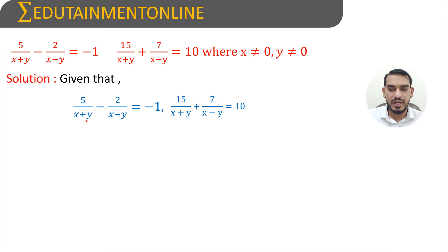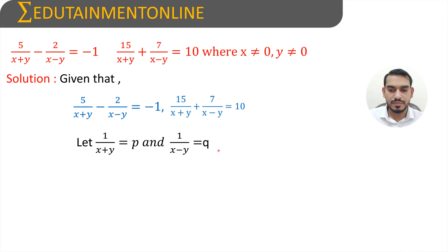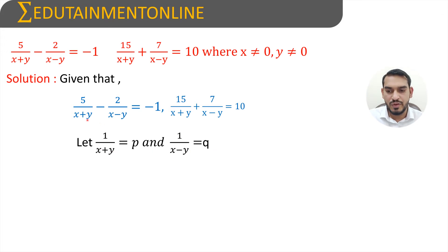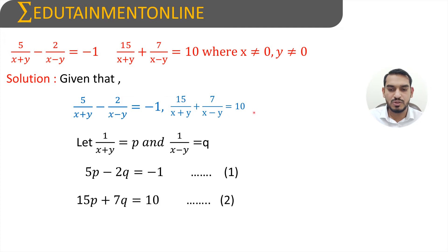Here we have (x+y) and (x−y) in the denominators. So we can consider 1 by (x+y) as p and 1 by (x−y) as q. Substituting these values, we get 5p minus 2q equals minus 1 as equation 1, and 15p plus 7q equals 10 as equation 2.